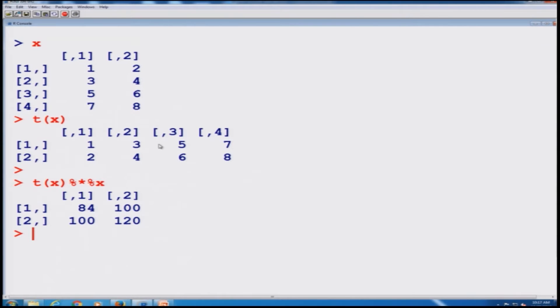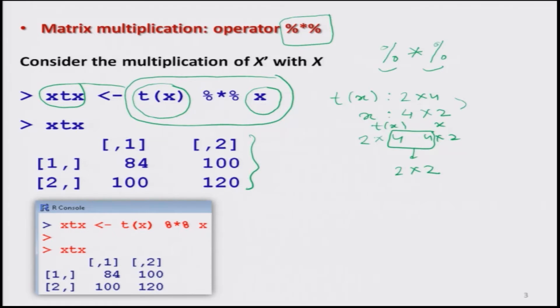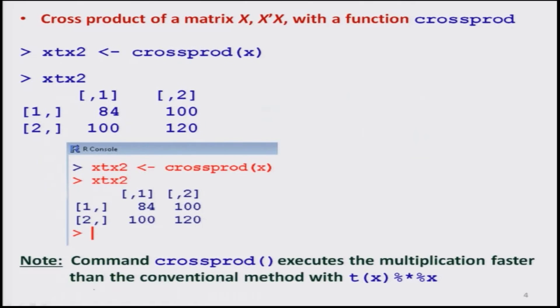Similarly, if you try to take any two matrices whose orders are compatible for matrix multiplication, you can get the same outcome. We all know that matrix theory helps us a lot in mathematics, and matrix manipulations are very important to learn. Transpose is one of the basic fundamental operations.